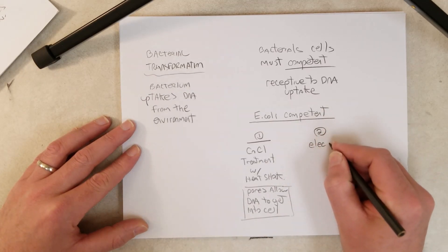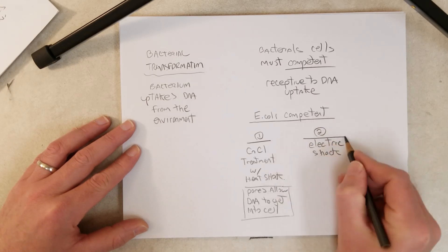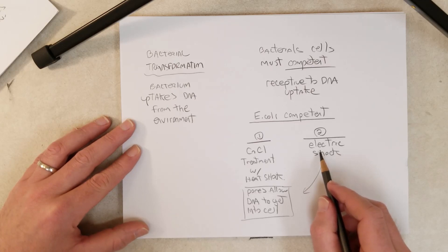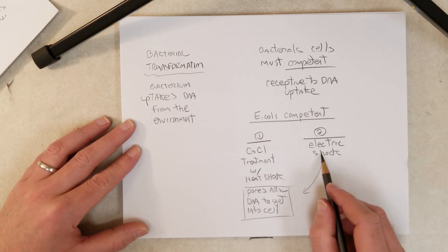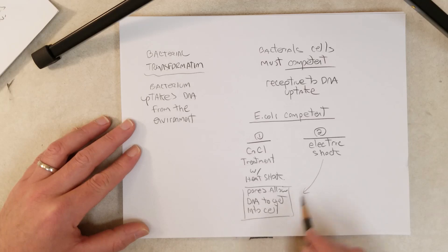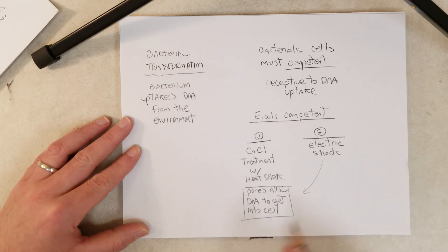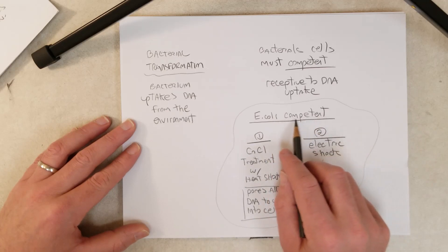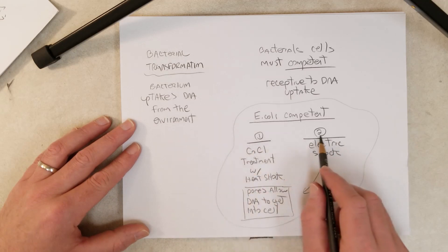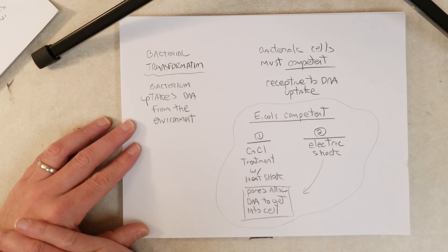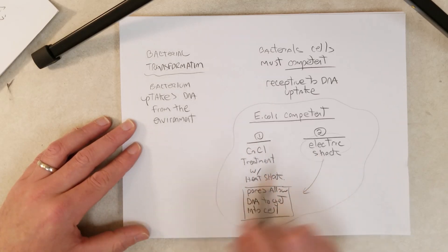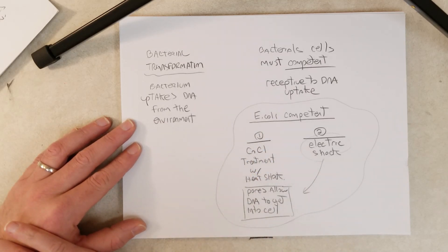Another method commonly used is electric shock. The electric shock is thought to work in a similar way: you make a suspension of bacteria, add DNA to the suspension, and apply an electric shock to the cells. It's thought to form pores in the cell walls and membranes. Some of the DNA gets into the cells, and not all cells die. These two methods are the main ways to make E. coli competent, which is our model bacterium for genetic research.